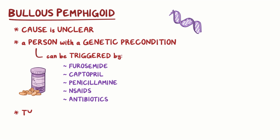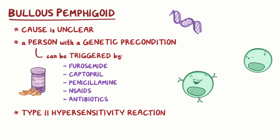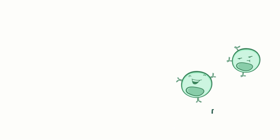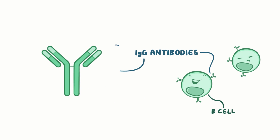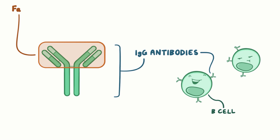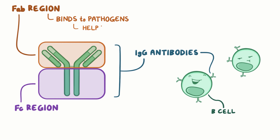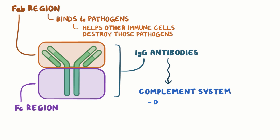Bullous pemphigoid is a type-2 hypersensitivity reaction, which is when the immune system produces antibodies that bind to the body's own cells. Immune cells called B cells produce IgG antibodies, which are Y-shaped molecules with two regions: an antigen-binding fragment region, or Fab region, and a fragment-crystallizable region, or Fc region. The Fab region of the antibody binds to pathogens to help other immune cells destroy those pathogens. The antibodies can also activate a part of the immune system called the complement system, which destroys the pathogen or induces inflammation.